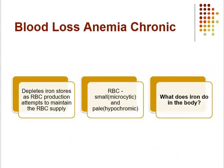With chronic blood loss — such as a slow GI bleed or Crohn's disease — it's more of a chronic issue that depletes iron stores and RBC production as the body tries to maintain RBC supply. Iron is necessary for hemoglobin and RBC production, so these cells end up small — microcytic — and hypochromic, appearing pale. This looks very different from an acute blood loss situation.